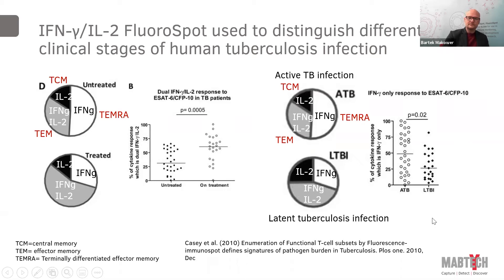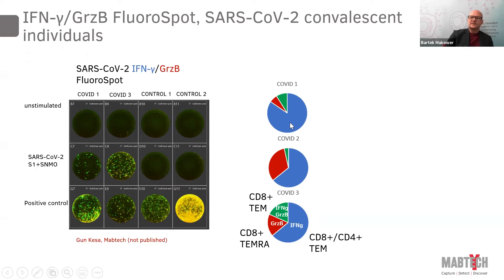Coming into cytotoxic T cells — which are harder to address using flow cytometry — you can use interferon gamma–granzyme B FluoroSPOT. Two individuals show nice interferon gamma-granzyme responses when stimulated with the SNMO plus S1 pool, while controls show no antigen-specific responses. There are quite big differences between individuals — individual number one has many cells making interferon gamma but not many making granzyme. Cells making granzyme are cytotoxic T cells, which are very important for killing virus-infected cells.